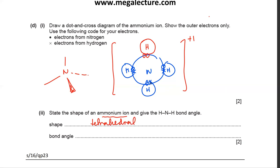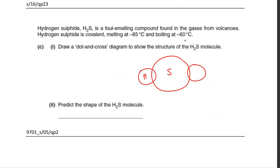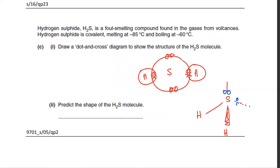Draw the dot-and-cross diagram to show the structure of H2S. Sulfur has six electrons and is bonded to two hydrogen atoms, leaving four electrons — two lone pairs. The shape is derived from a tetrahedral arrangement with two hydrogens on two sides and lone pairs on the other two sides. Since the lone pair sides aren't counted as part of the shape, it's a bent shape.